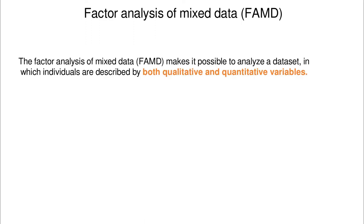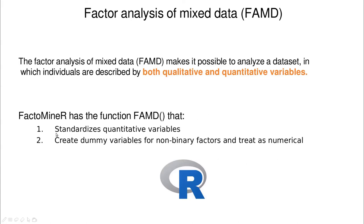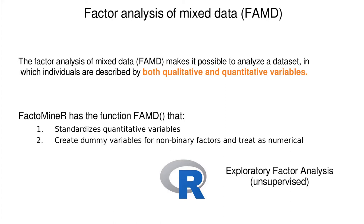The idea of FAMD is that I'm not going to care about the type of variable. I'm going to try to combine categorical and quantitative variables. I'm going to do some transformation of the data and show you how to do that in R. We're going to standardize quantitative variables, and for categorical variables that are non-binary, we're going to create dummy variables and treat them as numerical. So essentially, factor analysis of mixed data is the same as PCA, but transforming the categorical variables in the right manner. By the way, I'm referring here to what is called exploratory factor analysis, which is the unsupervised version of factor analysis.